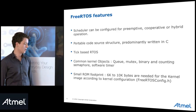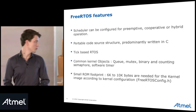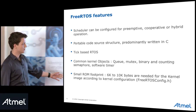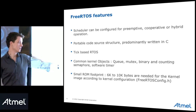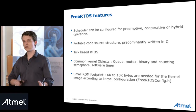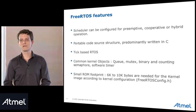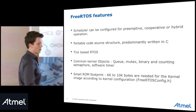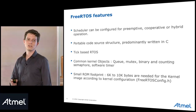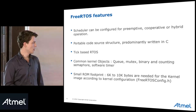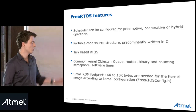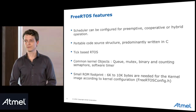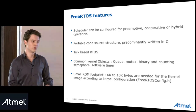Last but not least, FreeRTOS has a small ROM footprint. You can fine-tune it to go down to as little as 6 KB, with the range being 6 KB to 10 KB depending on which kernel features you use. You can configure everything in what we call FreeRTOSConfig.h, which will be automatically included if you use the ASF module, allowing you to reduce the footprint. This small footprint is really well suited for embedded MCU systems.